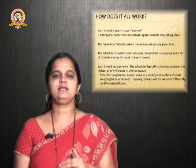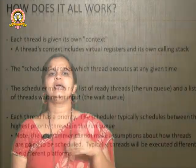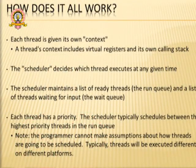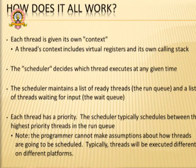In multiprocessing, the user is not supposed to do anything — the user can only execute different processes. But in multithreading, the user can create their own threads. For example, when you open a browser, you can open different threads — that is, different tabs. Each and every tab you open in a browser is executed as a thread. That is how multithreading works.